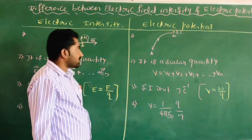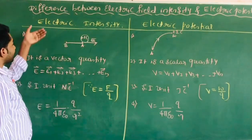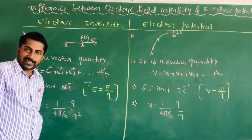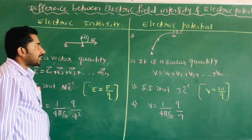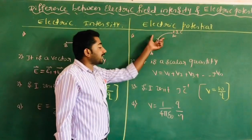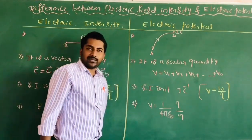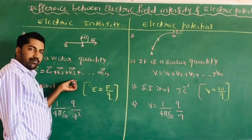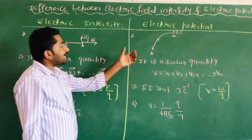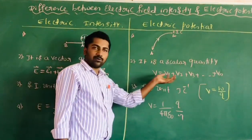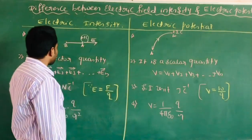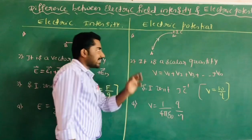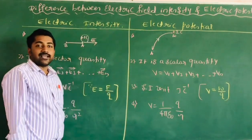The second difference: electric intensity is a vector quantity, electric potential is a scalar quantity. Vector quantity means it has both magnitude and direction, but electric potential has only magnitude and not direction. That is why electric intensity is a vector quantity and electric potential is a scalar quantity.